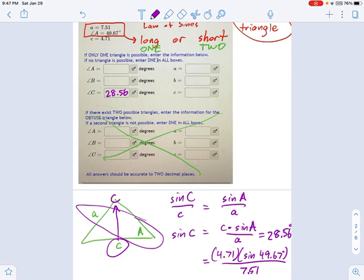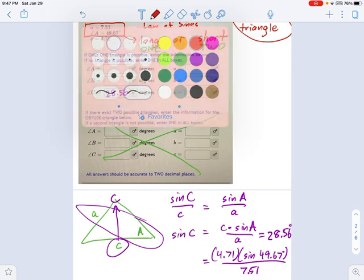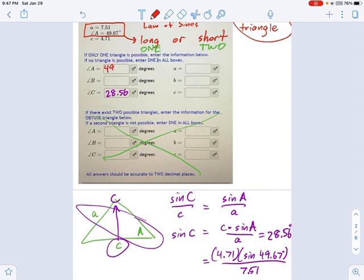Now, since we already knew A, that was given to us up front at the beginning of the problem, 49.67, along with side A and side C. Now take a look at this. We've got a lot to go on here. I want to find side B eventually. I'll need angle B for that.